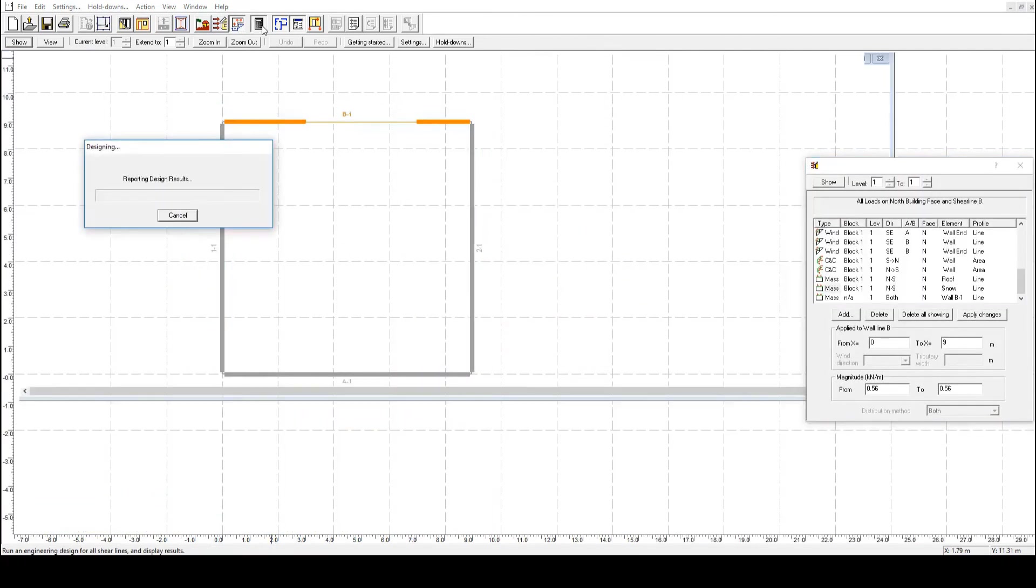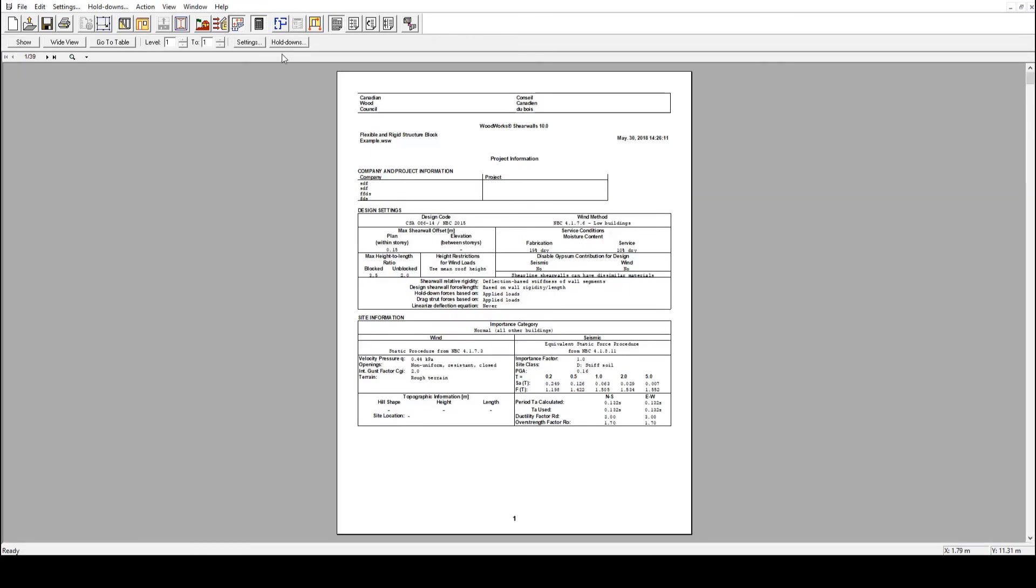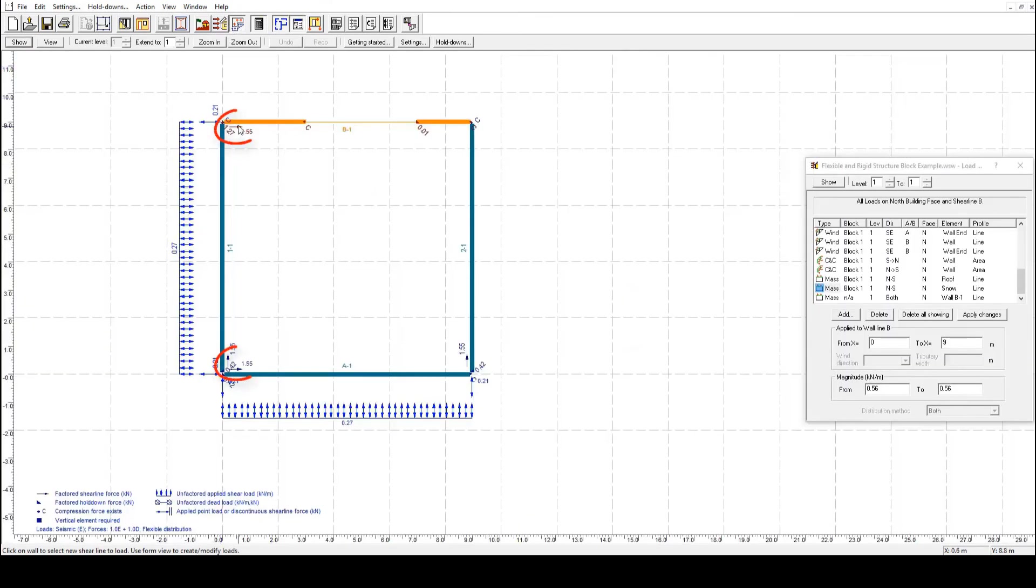By running the design, we can see that when we use the flexible diaphragm distribution, the distribution of load is based only on the tributary width of the shear lines, and since there are only two shear lines, the design force is equivalent in both of them.